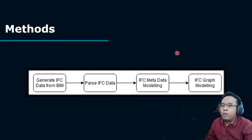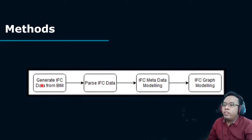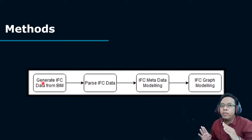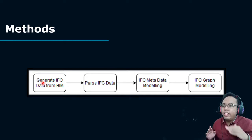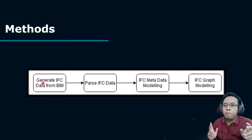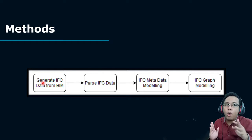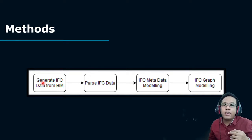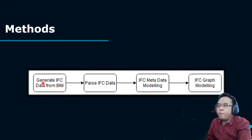This is our methodology for conducting the research. First, we design a host model from BIM and generate IFC data from BIM. Next, we parse the IFC data into JSON format, followed by IFC metadata modeling, and finally IFC graph modeling.